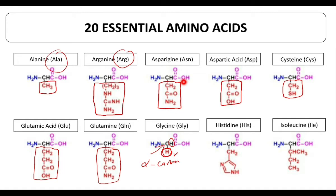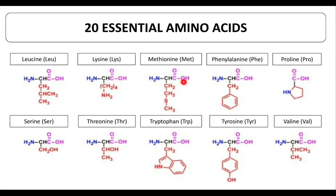Histidine has a ring-containing side chain, and isoleucine has a branched aliphatic side chain. These are the first ten essential amino acids. Let's look at the other ten.